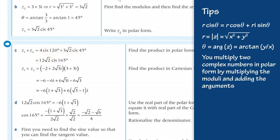Now multiply the same numbers in Cartesian form to find the Cartesian coordinates of the product. Use the distributive property and the powers of the imaginary unit. (−2 + 2√3·i)(3 + 3i) = −6 − 6i + 6√3·i − 6√3. Separating real and imaginary parts gives −6(1 + √3) + 6(√3 − 1)·i.